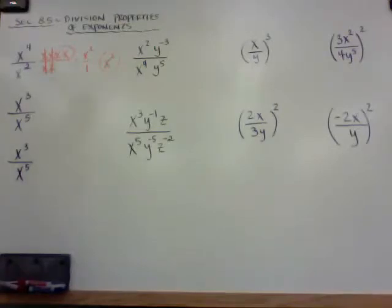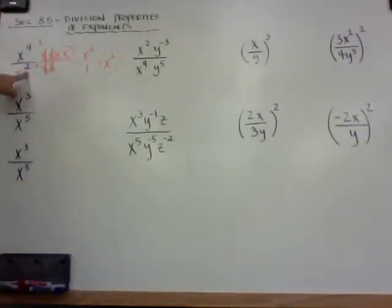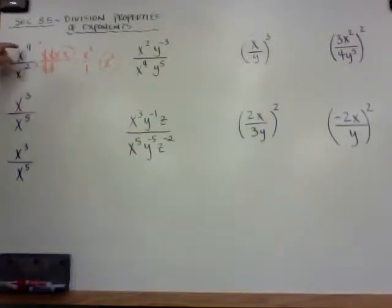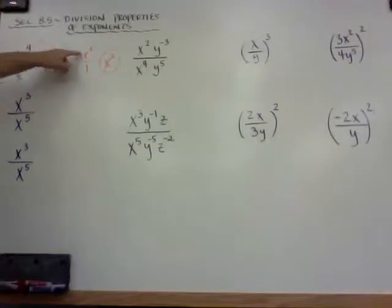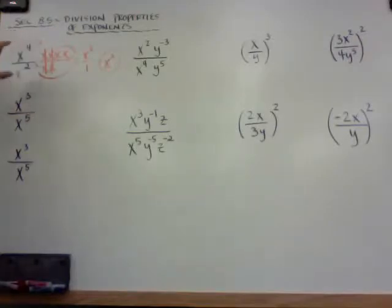The shortcut way of doing it is if I have 4 over 2, I can just minus 2 to make this x to the 0 on the bottom. And x to the 0 becomes 1. Then 4 minus 2 is 2, and I'm left with x squared over 1, which is just x squared. So again, this is the long way of doing it. The shortcut is just subtracting the exponents up here.